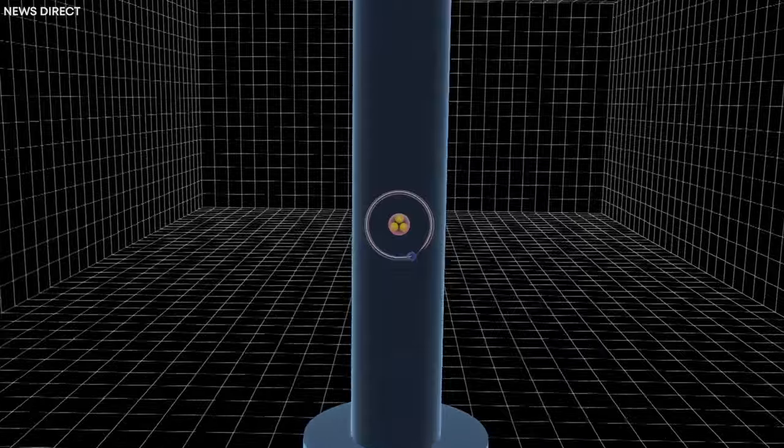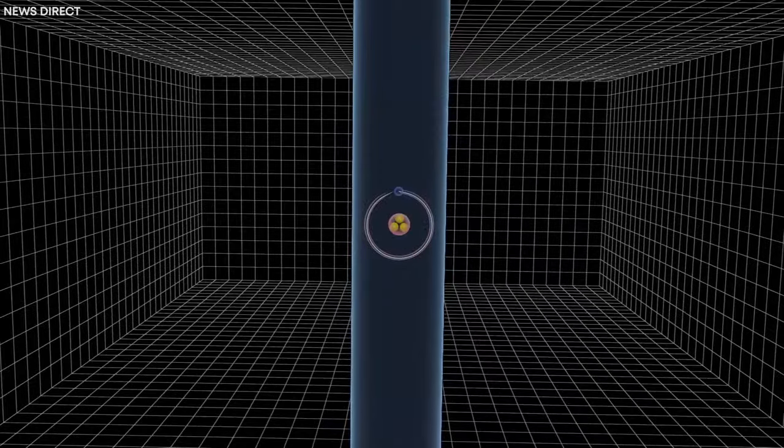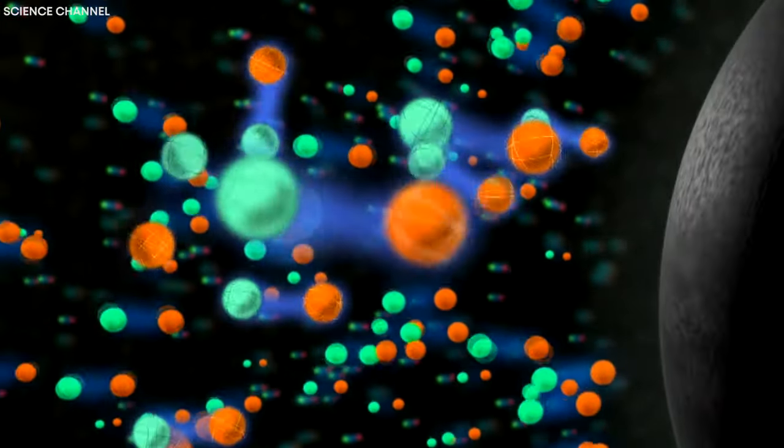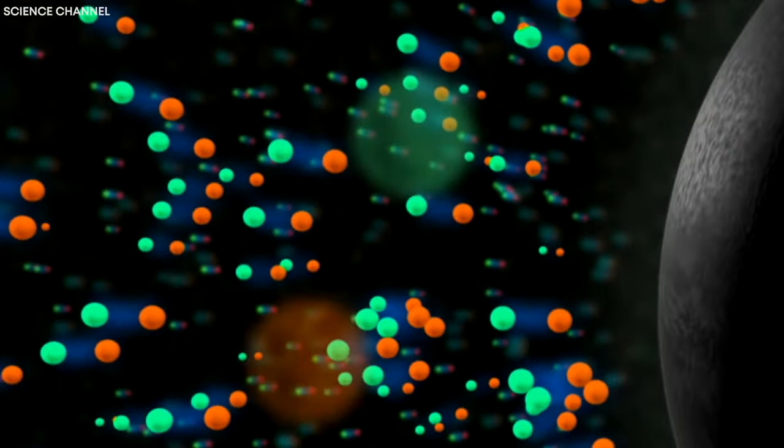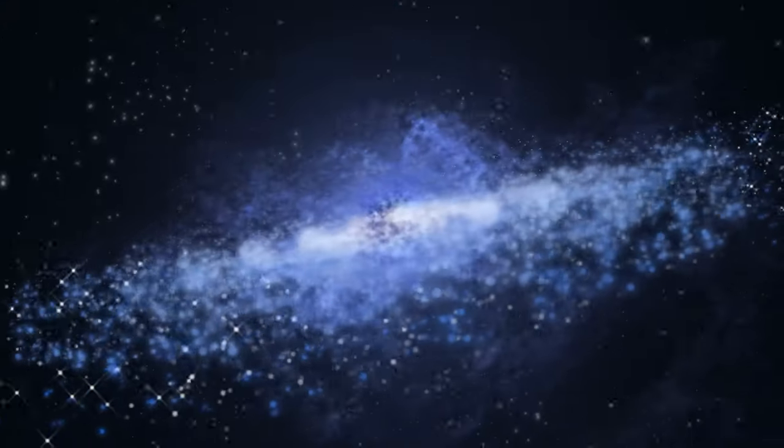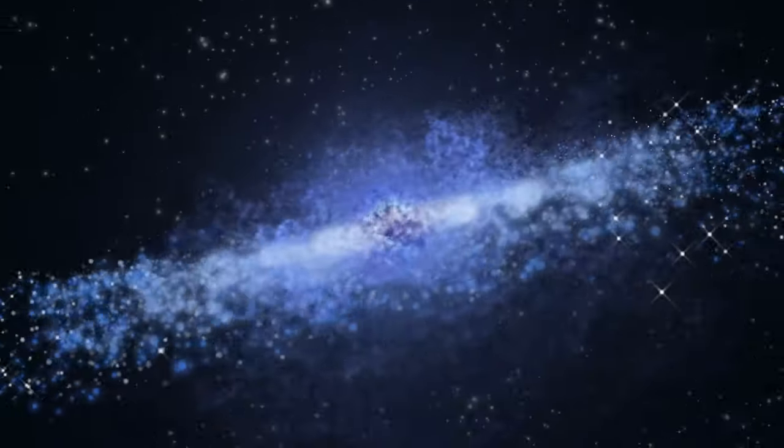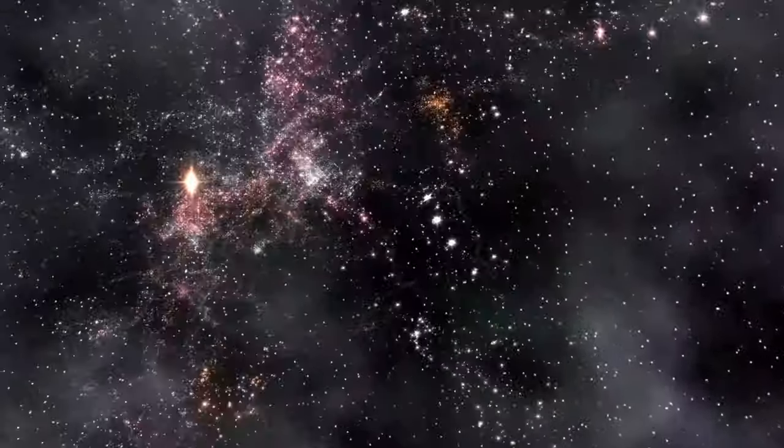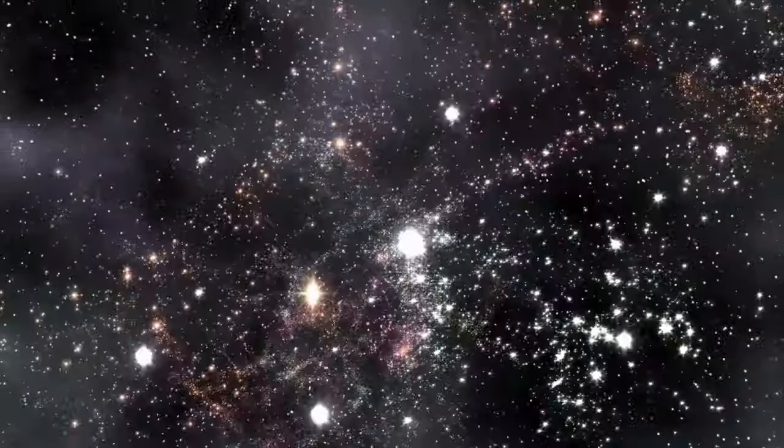Postulating that antimatter has a negative gravitational charge would mean that antimatter particles would be repelled by ordinary matter, and hence they would move in the opposite direction of gravity. And if that were to happen, the consequences would have been too far-reaching for our planet.